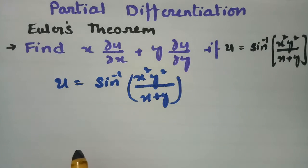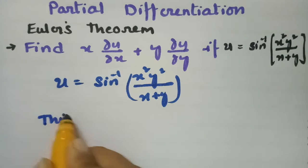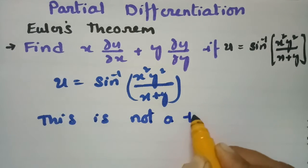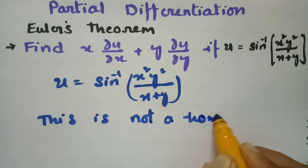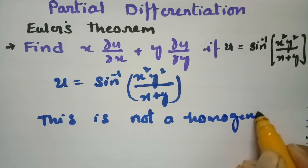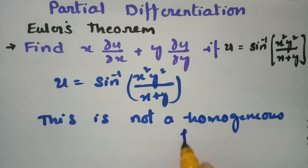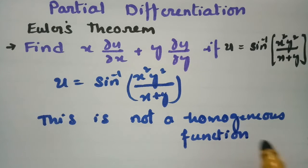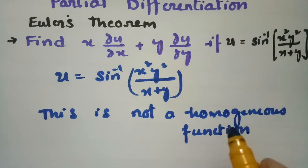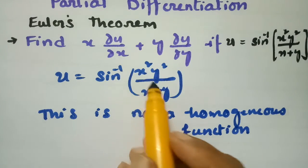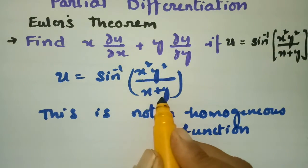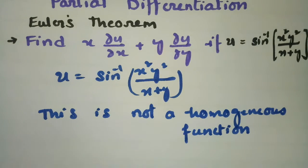If you observe this function, this is not a homogeneous function. The numerator is of degree 2 and the denominator is of degree 1, so this is not a homogeneous function.